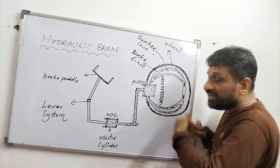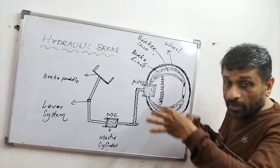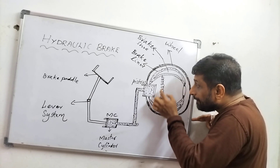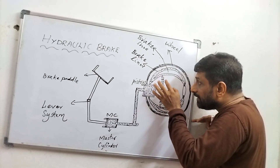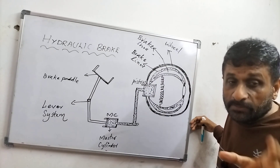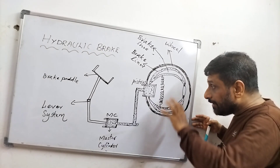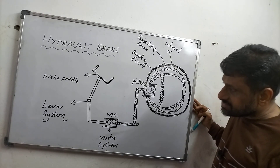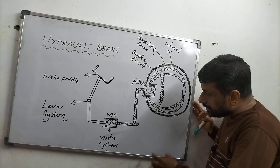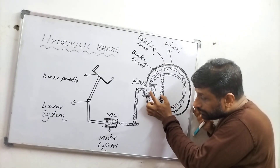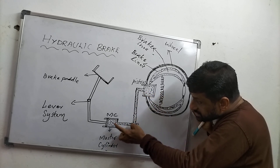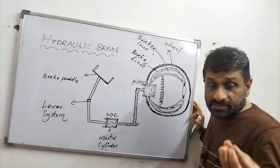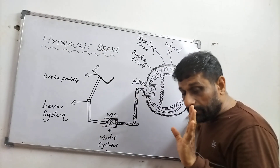The brake shoes open up wider. The brake shoes press against the brake liner of the wheel. The brake liner of the wheel brings the vehicle to rest. When the brake pedal is released, the brake fluid moves back from the piston to the master cylinder, and the piston returns. The brake is released.